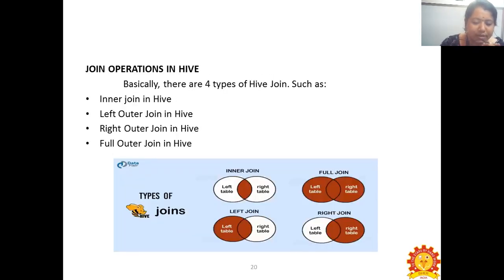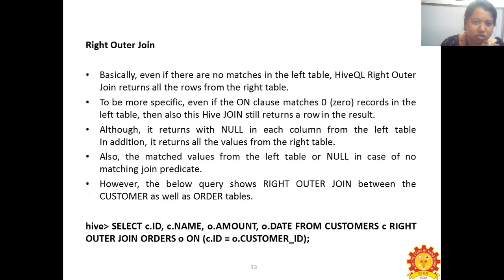In the Right Outer Join, we retrieve all records from the right table and the common parts of both tables. Even if there are no matches in the left table, HiveQL Right Outer Join returns all rows from the right table, with null values from the left table where there is no match. Example query: SELECT customerID, customerName, orderedAmount, orderDate FROM customers RIGHT OUTER JOIN orders ON customer.customerID = order.customerID.